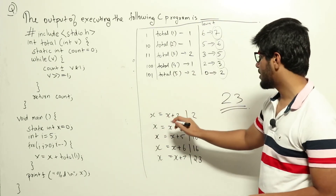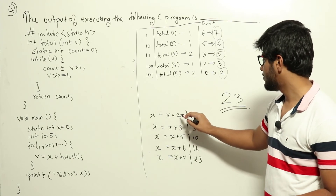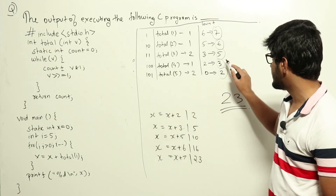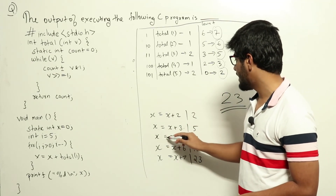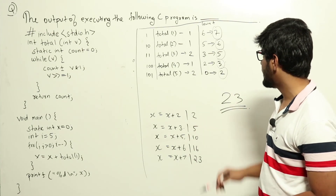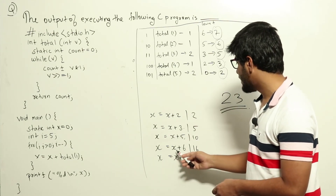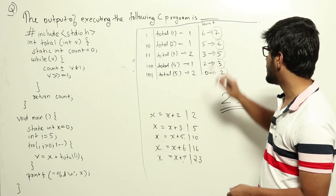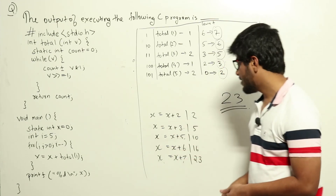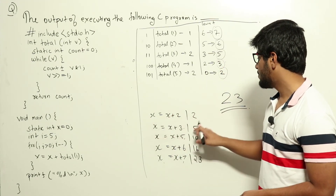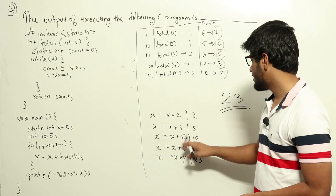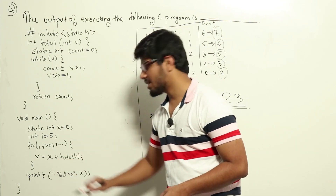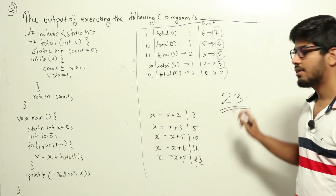In the loop, x accumulates these return values: x starts at 0, add 2 → x = 2, add 3 → x = 5, add 5 → x = 10, add 6 → x = 16, add 7 → x = 23. After the loop finishes, x is 23, and that is what gets printed. So the answer is 23.